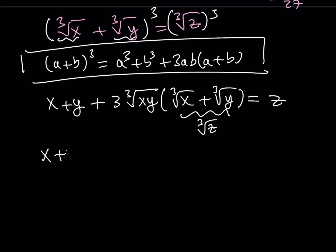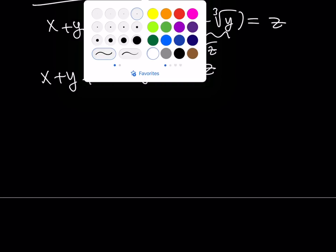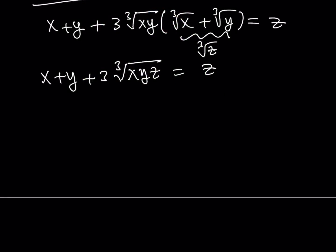So that gives me x plus y plus 3 times the cube root of xyz equals z. My goal is to clear the radicals, remember that. So in order to get rid of all the radicals, I'm going to isolate the cube root piece. So let's go ahead and do it. I will subtract x plus y from both sides. It's going to give me z minus x minus y. And then I'll divide both sides by 3. Great.